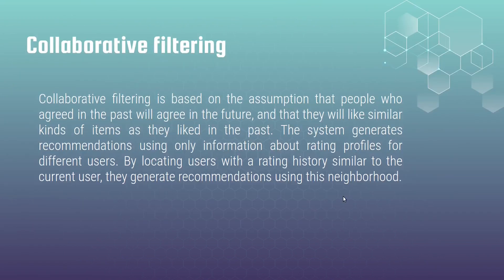Let's return to collaborative filtering and its definition. Collaborative filtering is based on the assumption that people who agreed in the past will agree in the future, and that they will like similar kinds of items as they liked in the past. The system generates recommendations using only information about rating profiles for different users. By locating users with a rating history similar to the current user, they generate recommendations using the neighborhood. That was a boring scientific definition.